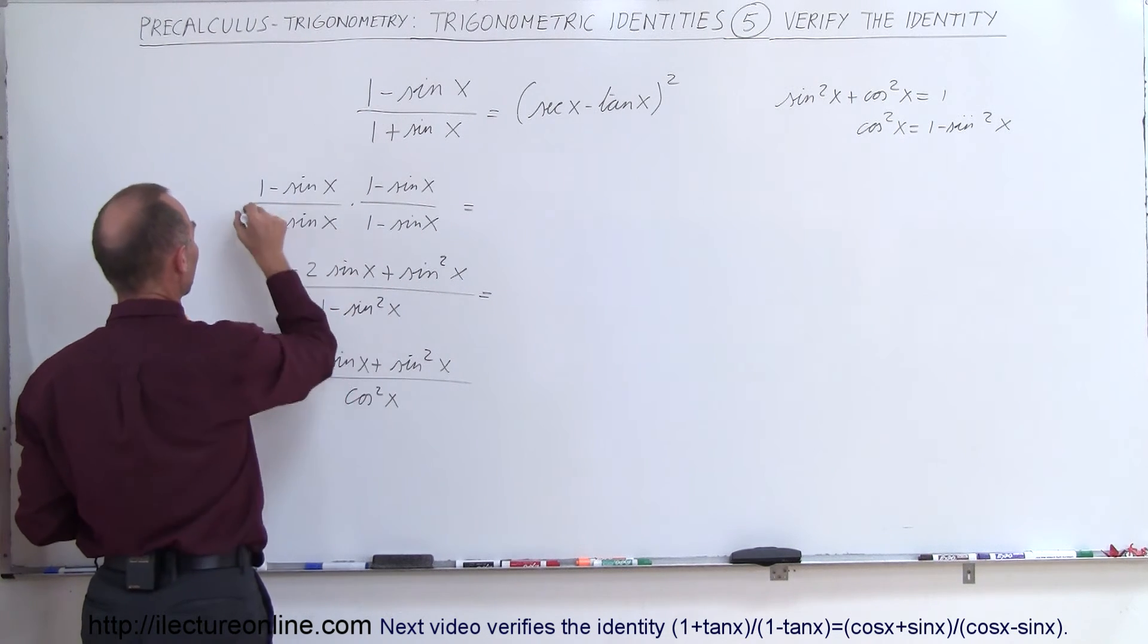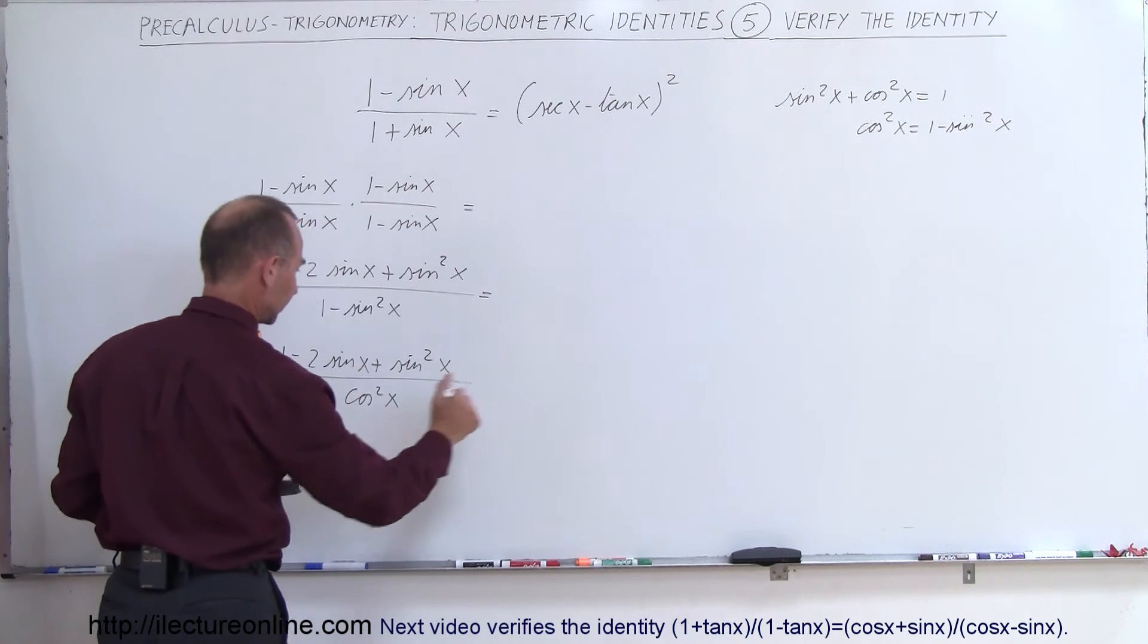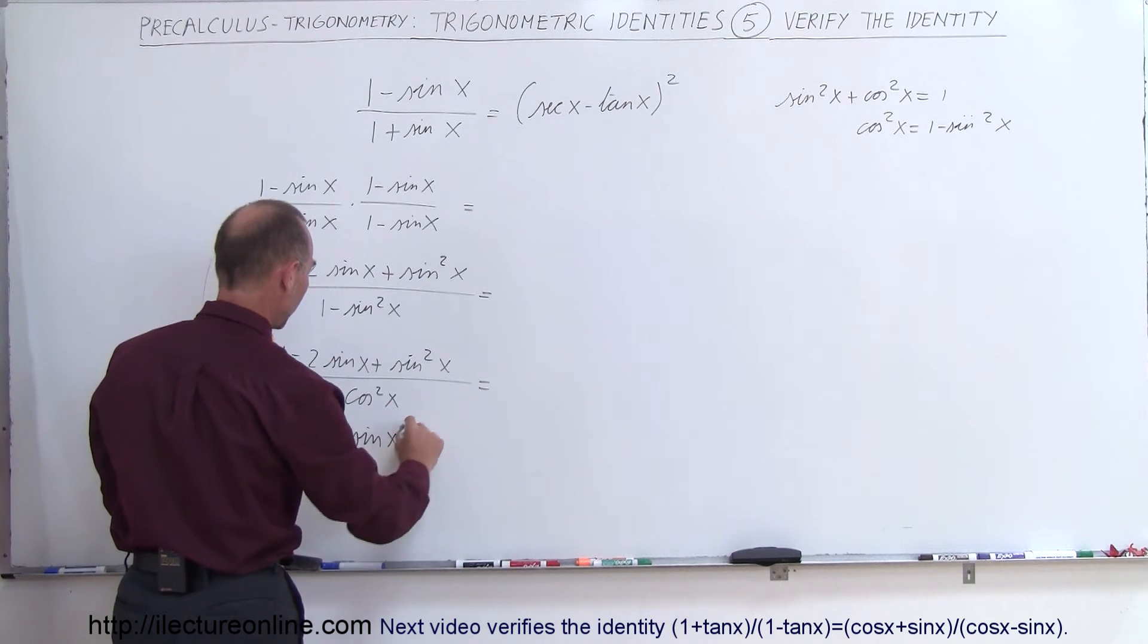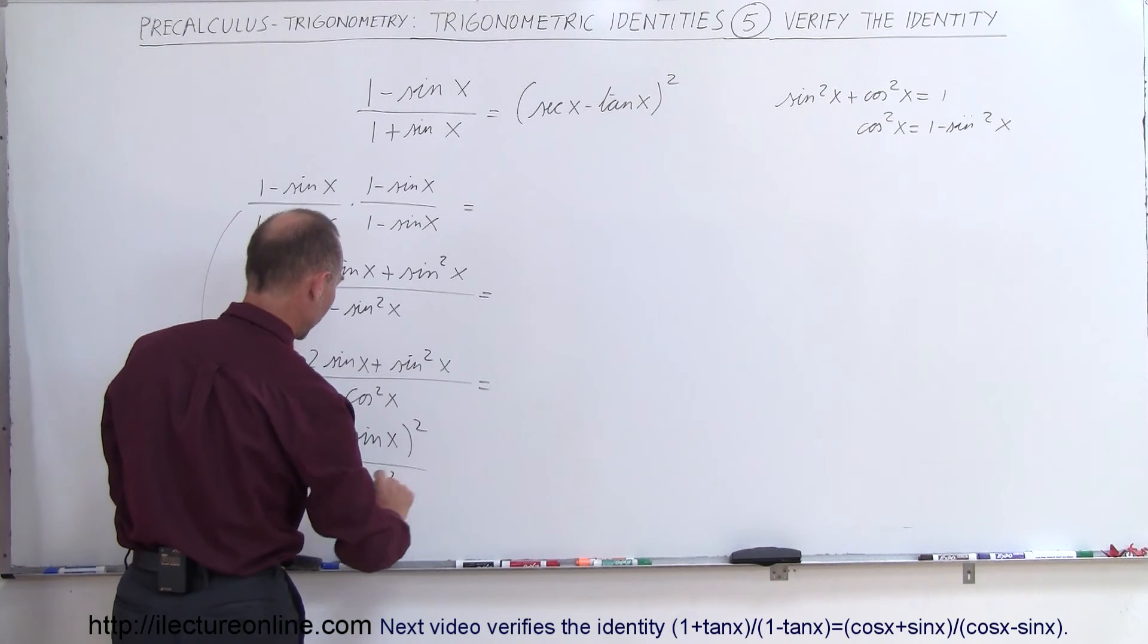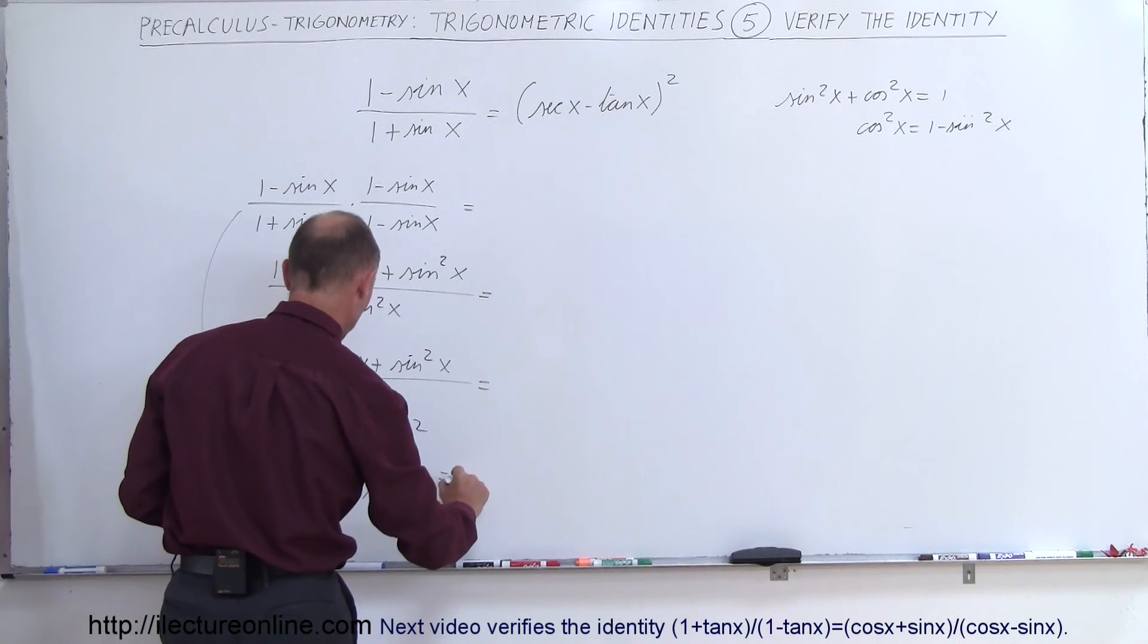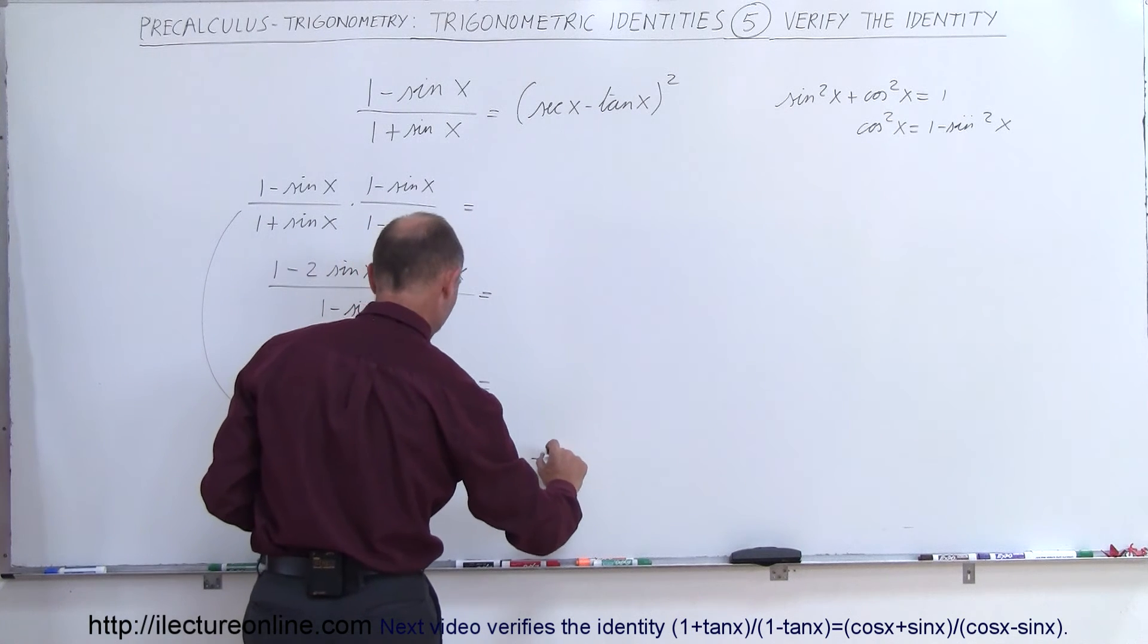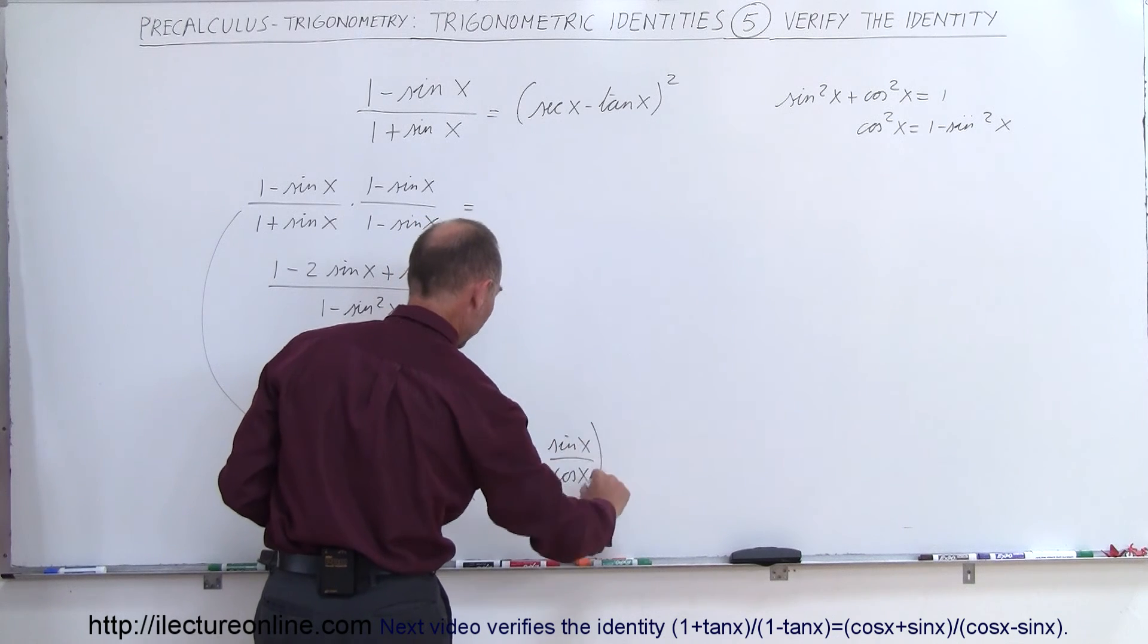So instead of writing this, I'm going to go back this way and say, well, this is equal to, I'll write the equal sign over there. How about 1 minus the sine of x quantity squared divided by the cosine of x quantity squared, like that. And then I'm going to divide the denominator into the numerator. So this can be written as 1 over the cosine of x minus the sine of x over the cosine of x and the whole thing squared.